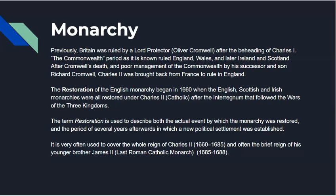Once this began in 1660, the English, Scottish, and Irish monarchies were all restored under one crown, and Charles II was Catholic. The term 'restoration' is used to describe both the actual event by which the monarchy was restored and also the period of several years afterwards in which the new political settlement was established.